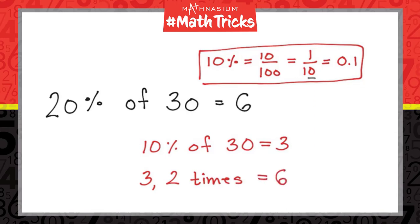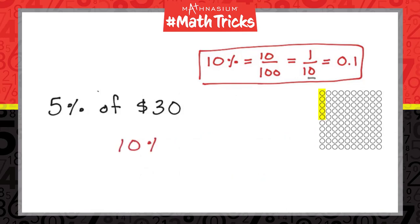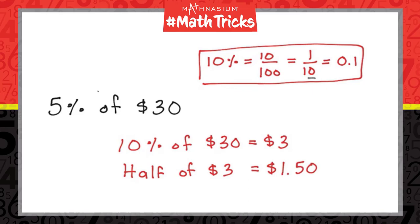If we want to find the 5% tax on a $30 purchase, we take half of 10% of 30. 10% of 30 is 3, half of 3 is 1 and 1 half, so 5% of 30 is 1 and 1 half, and the tax is equal to $1.50.